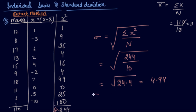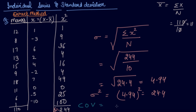If we have to find the variance, it is 4.94 squared, which equals 24.4 itself. And if we need the coefficient of variation, the formula is: standard deviation divided by mean, multiplied by 100. So 4.94 divided by 11, into 100, gives approximately 45%.